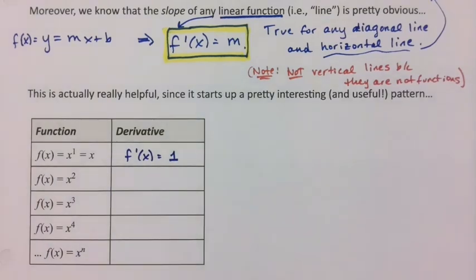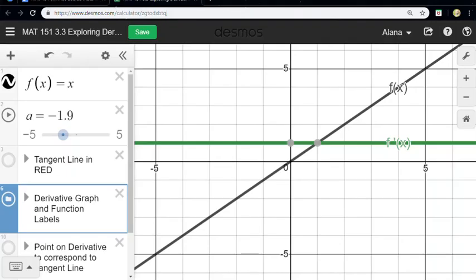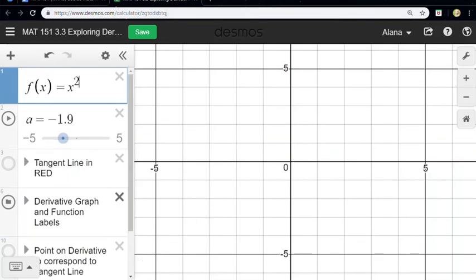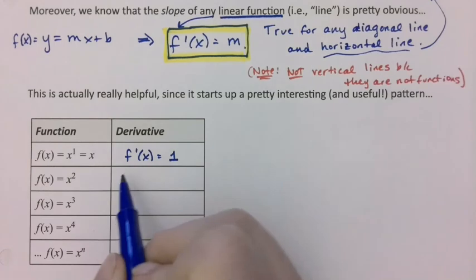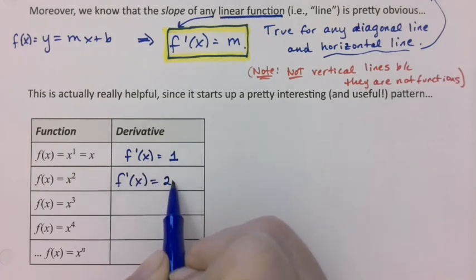Now what about if f of x was equal to x squared? So let me go here and put a little squared on this. Well, it's no longer 1. It's a line with slope equal to 2 as it goes through the origin. So it's 2x.